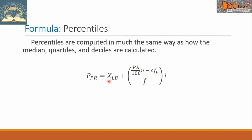Take note that this X sub LB is the lower boundary of the percentile class. The CF sub LB is the cumulative frequency of the class preceding the percentile class. This F here is the frequency of the percentile class. And I is the class width.